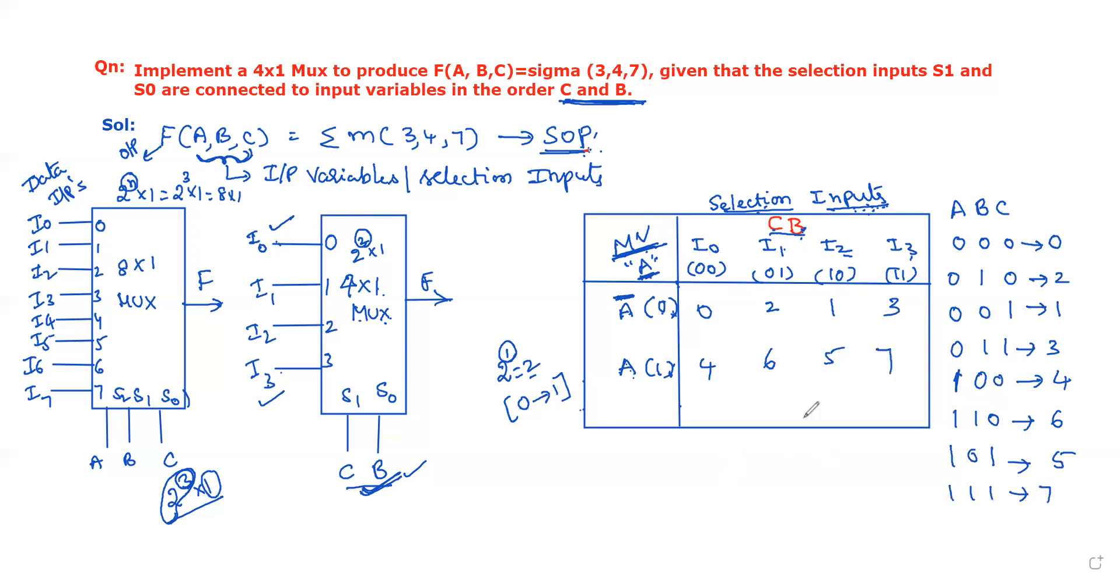After writing the min-term numbers, now we should circle the given min-term numbers from the Boolean function. These are 3, 4, and 7 only. Now we write the equivalent values for i0, i1, i2, i3. Here only one min-term number is selected, so its value is A.